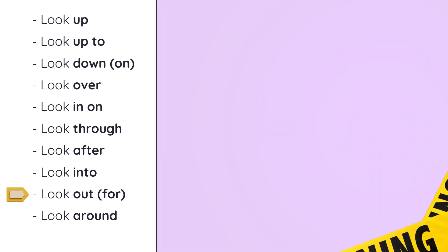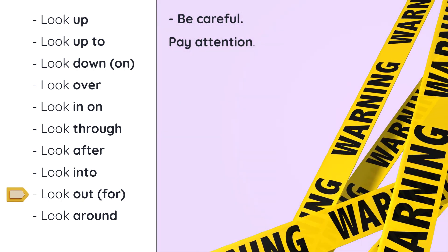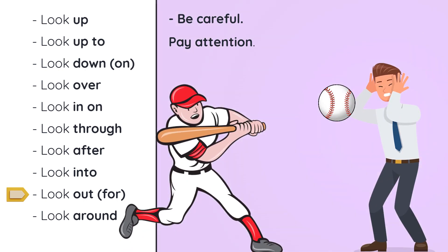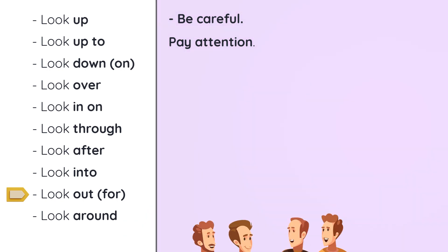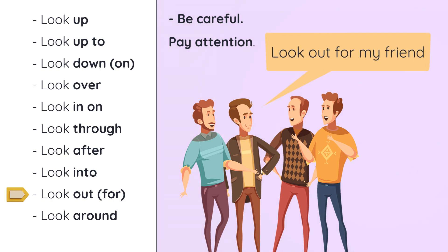Look out — be careful, pay attention. Something's coming. I throw a baseball and say, look out, because the baseball is about to hit you in the head. Be careful, be aware. Look out for means pay attention to. I will meet my friend on the corner, but I want you to look out for him or her in case you see them and I don't. Look out for — just pay attention to, be ready for something to happen, expect something to happen.